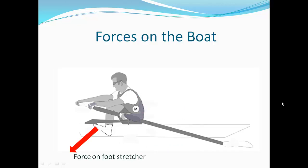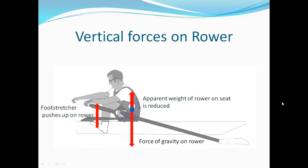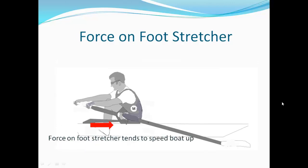The first force that affects boat acceleration directly is the force on the foot stretcher due to the rower pushing on it — this force is perpendicular to the foot plate. Since the foot stretcher is typically at an angle of 45 degrees, the foot stretcher force has a horizontal component and a vertical component. The vertical component reduces the effective weight of the rower on the seat during the drive — the apparent weight of the rower can be reduced by as much as 80% at the beginning of the drive. The horizontal component is the force that contributes to the acceleration of the boat: if the rower is pushing on the foot stretcher, the force is toward the stern and tends to slow the boat down; if pulling up on the foot stretcher, the force is toward the bow and tends to speed the boat up.